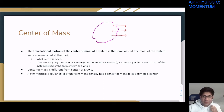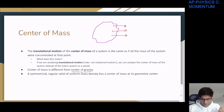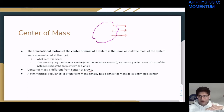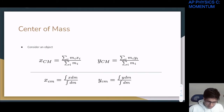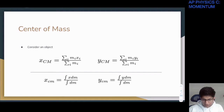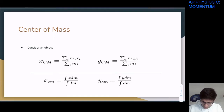One thing to note: center of mass is different from center of gravity. Center of gravity depends on the gravitational vector field, so if you orient an object standing up versus lying flat, the center of gravity might change — it won't always coincide with the center of mass.